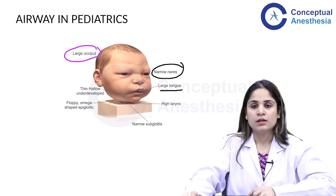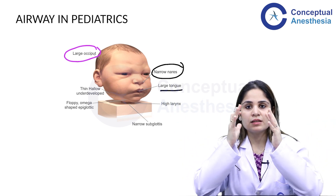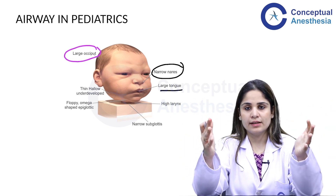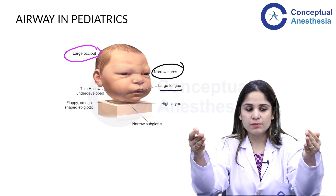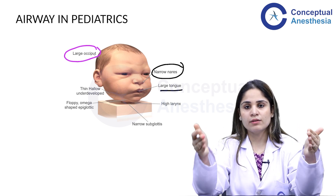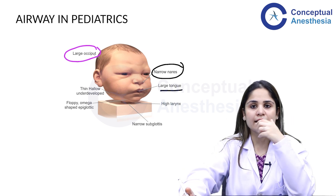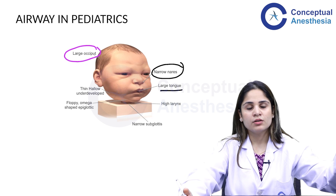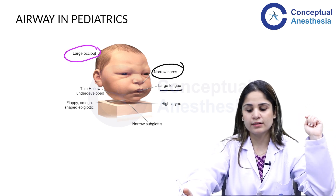Third, children have a large tongue — not actually larger, but large relative to the size of their oral cavity. In adults the tongue may be large but the oral cavity is proportionately bigger. In children, the oral cavity is small and the tongue is relatively very large, making it difficult to push the tongue aside and thus difficult to intubate.